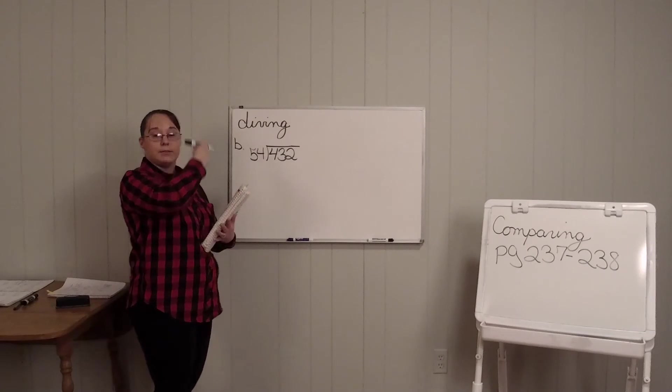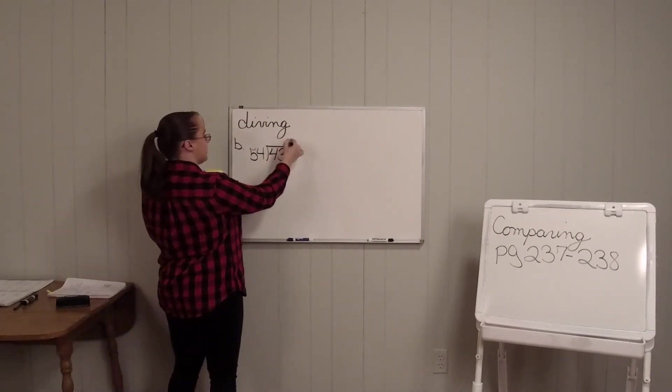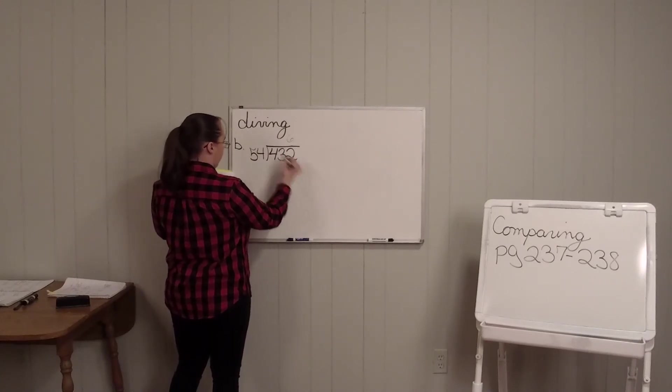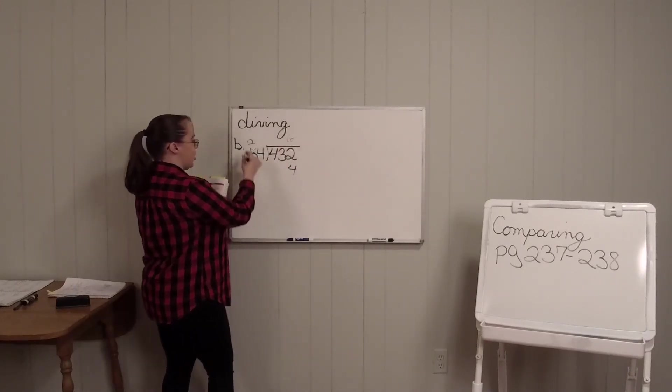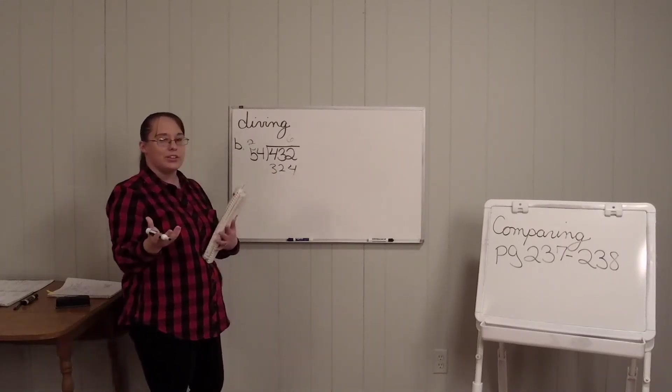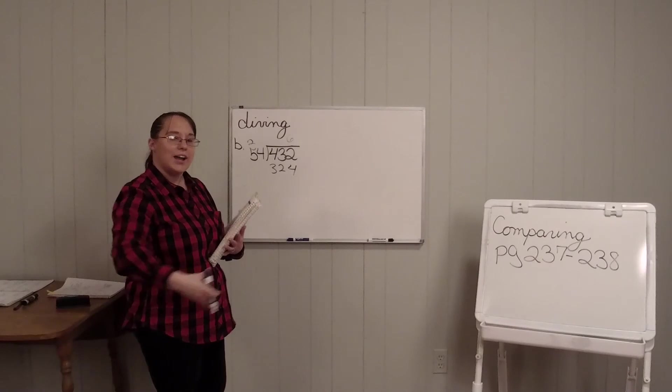This you might have to do some estimating. Like just pick a number and we'll say like 6. 6 times 4 is 24. 6 times 5 is 30. 31 is 32. Well, you know you can go bigger than that. Remember, you have to estimate sometimes when you're dividing.